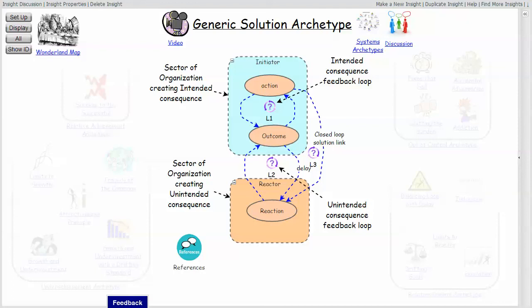This is the generic solution archetype that Eric came up with. He found that using this generic solution archetype, by defining the particular feedback loops as either balancing or reinforcing loops, he could come up with four different generic archetypes and map all of the other archetypes to them.